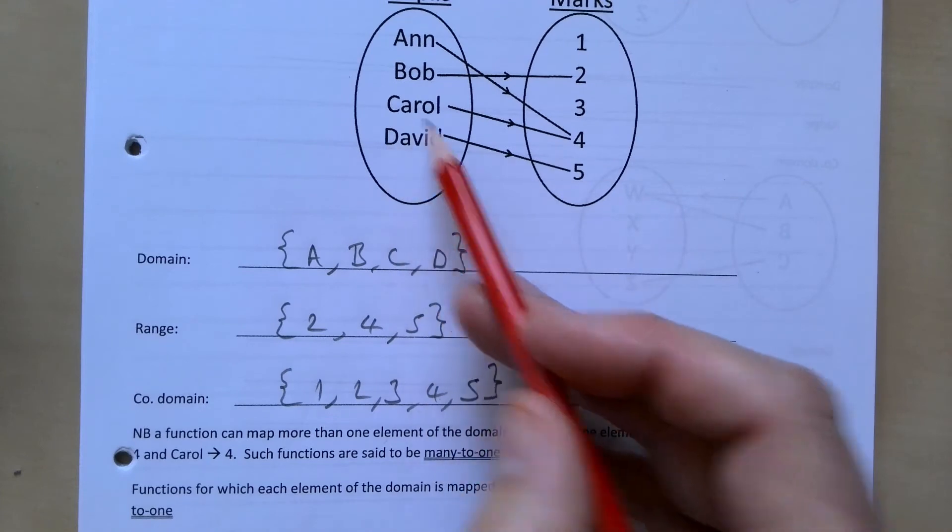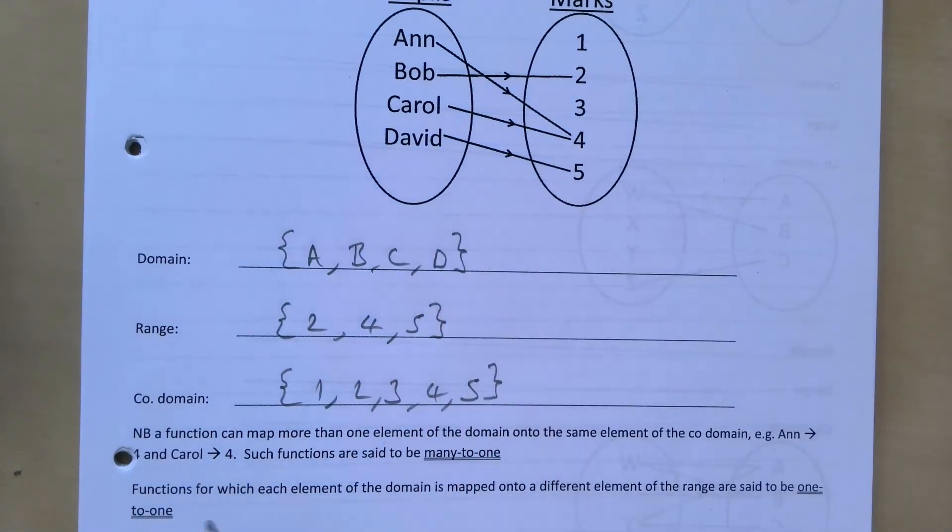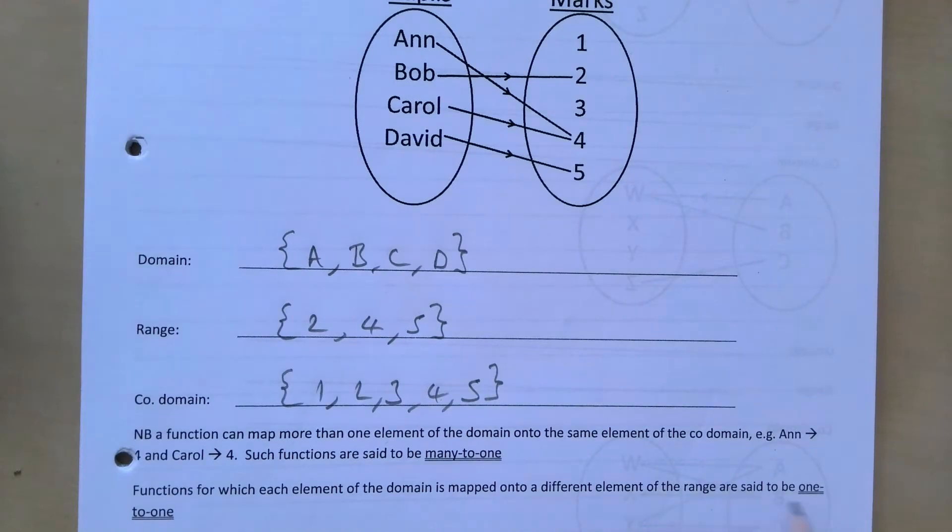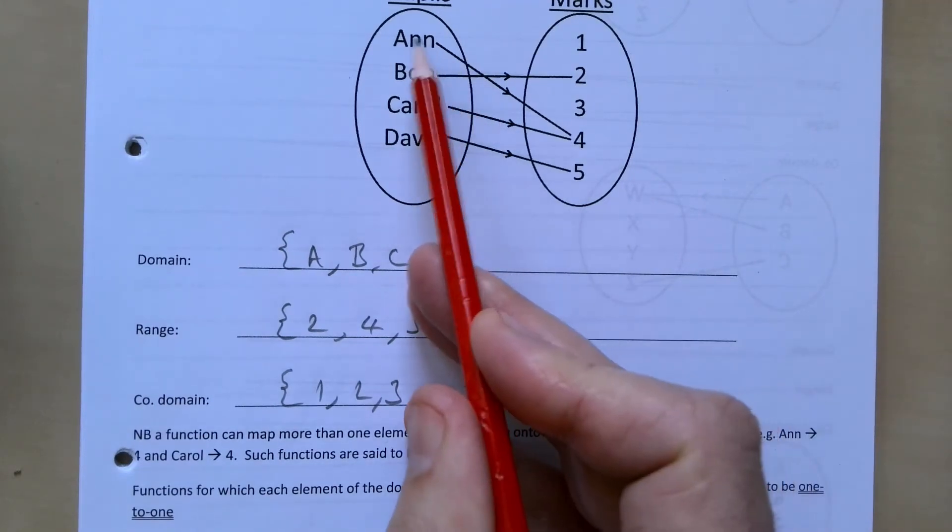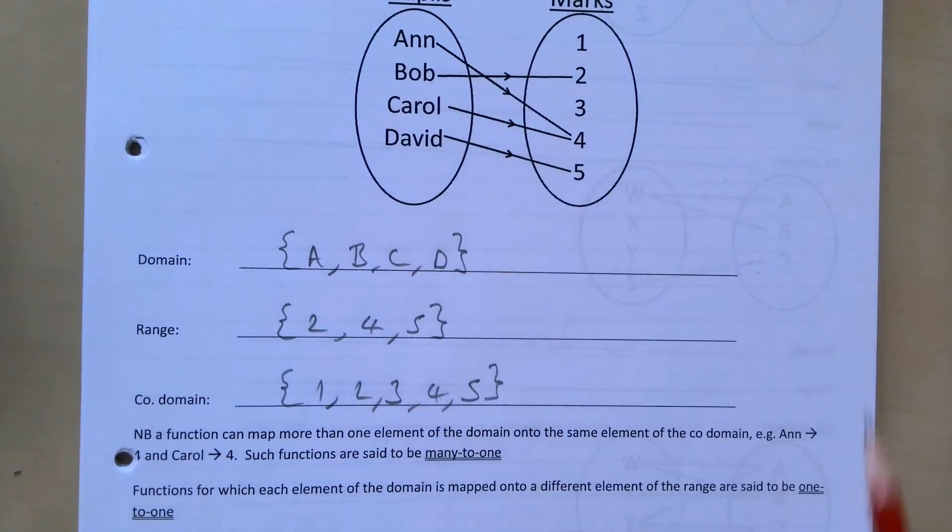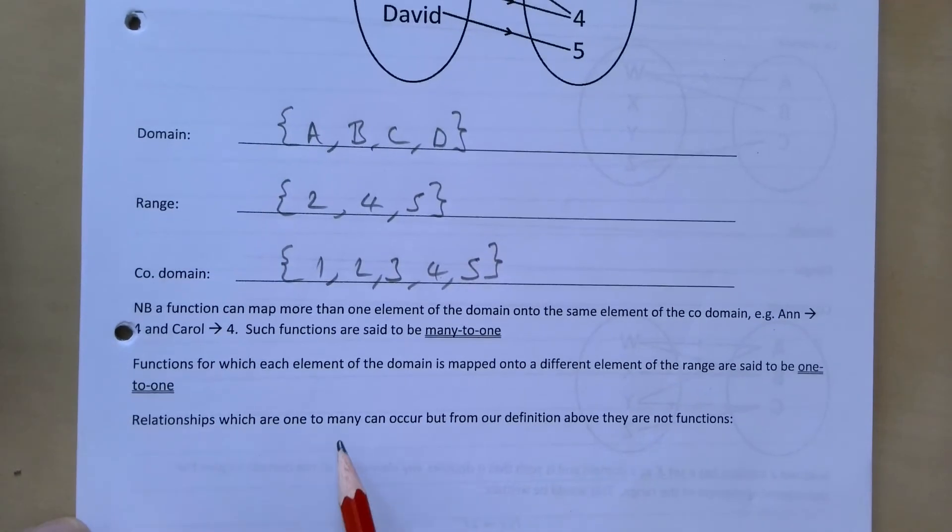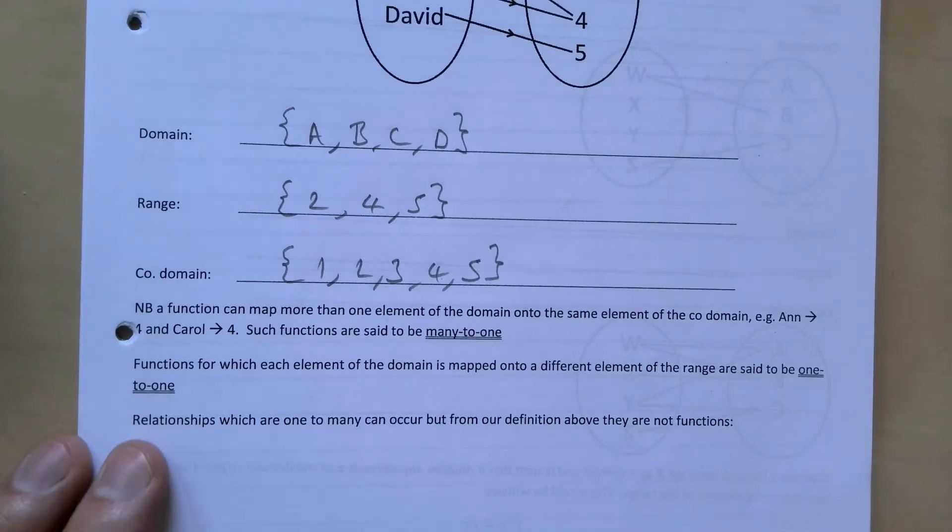Because there's many going from here into the one element here, functions for which each element of the domain is mapped onto a different element of the range are said to be one-to-one. So one-to-one would hopefully make sense, one goes to one and only one of the other one. Relationships which are one-to-many can occur, but from our definition above they are not functions.